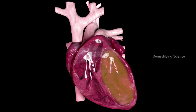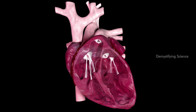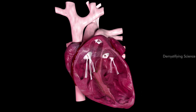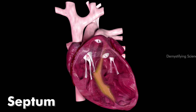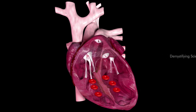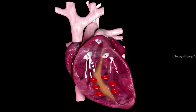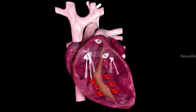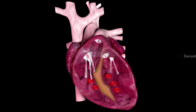The right and left hand side of the heart is separated by a muscular wall called the septum. The septum prevents the mixing of oxygenated and deoxygenated blood.